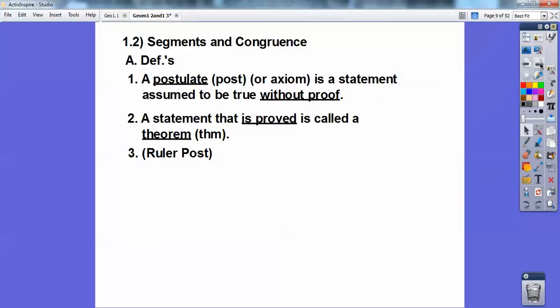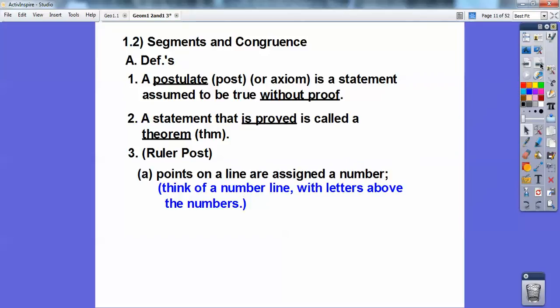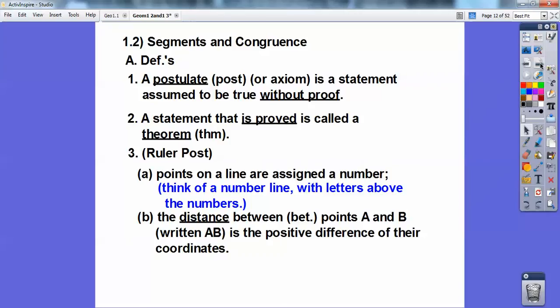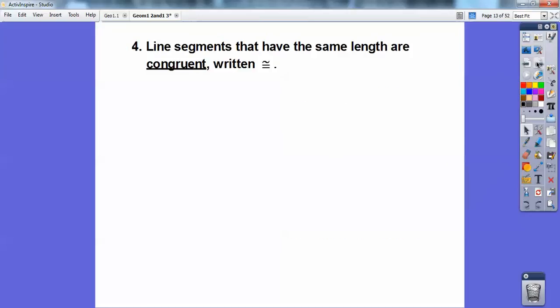So the ruler postulate. So this is something we're going to assume to be true without proof. So points on a line are assigned a number, and they're called the coordinates. So just think of a number line with letters above it. And the distance between the points, A and B, remember the distance is a length. So we would not have anything on top of the AB. It would just be nothing. And this means the length is the positive difference of their coordinates. So you subtract those numbers above them. Line segments that have the same lengths are congruent and are written like this, a little equal sign with a little squiggly on top. That's the word congruent right there. That's our math symbol for congruent.